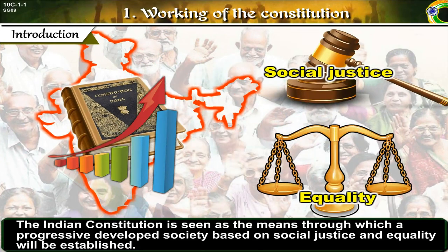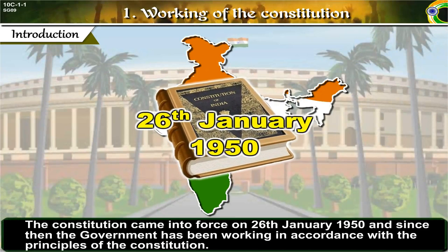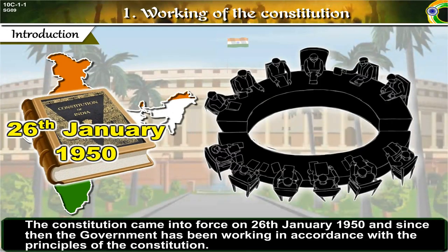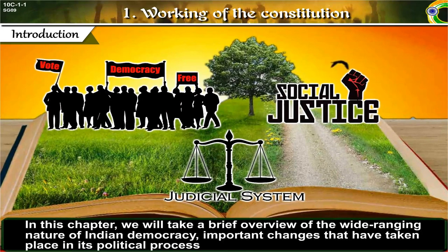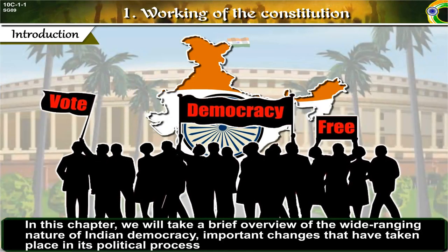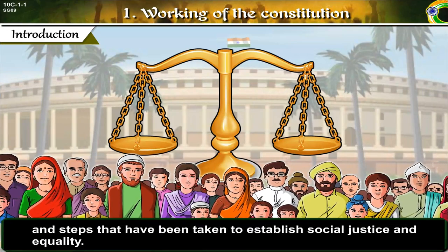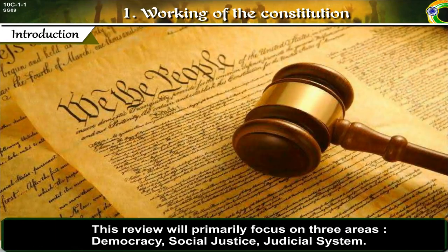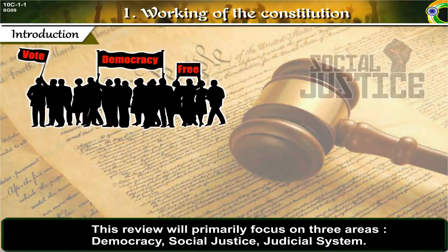The Indian Constitution is seen as the means through which a progressive, developed society based on social justice and equality will be established. The Constitution came into force on 26 January 1950, and since then the government has been working in accordance with the principles of the Constitution. In this chapter, we will take a brief overview of the wide-ranging nature of Indian democracy, important changes that have taken place in its political process, and steps taken to establish social justice and equality. This review will primarily focus on three areas: one, democracy; two, social justice; three, judicial system.